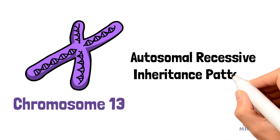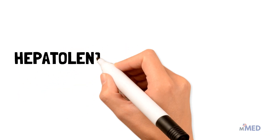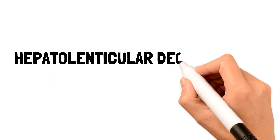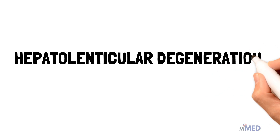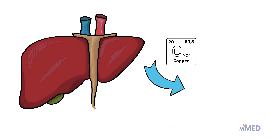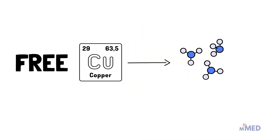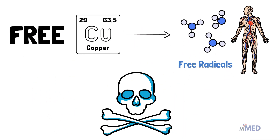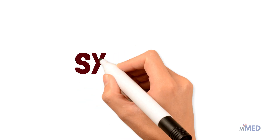Wilson's disease is also known as hepatolenticular degeneration. It results in inadequate copper excretion by the liver into the bile and failure of copper to enter circulation bound to transport proteins. Free copper generates free radicals that damage body tissues.